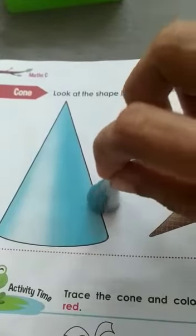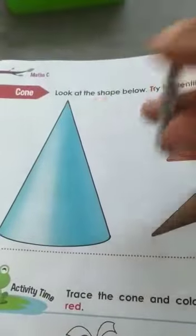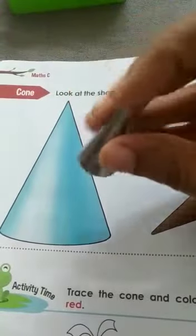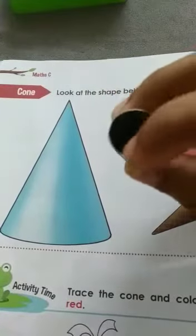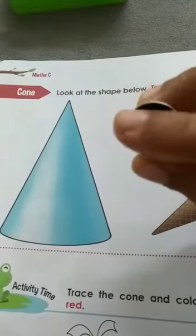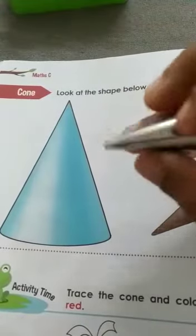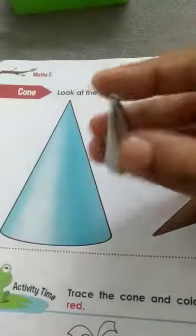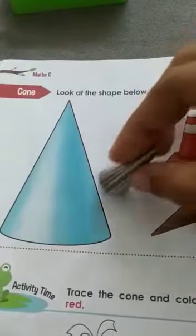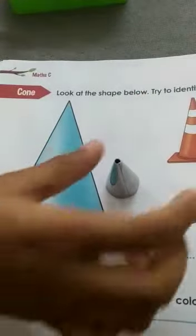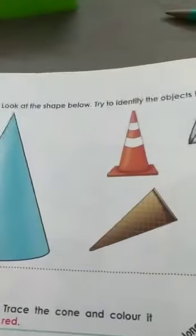So this is one corner — cone shape has just one corner. Down here this is a circular face, circular in shape, and here you have one corner. So this is cone shape. It is also a 3D shape.